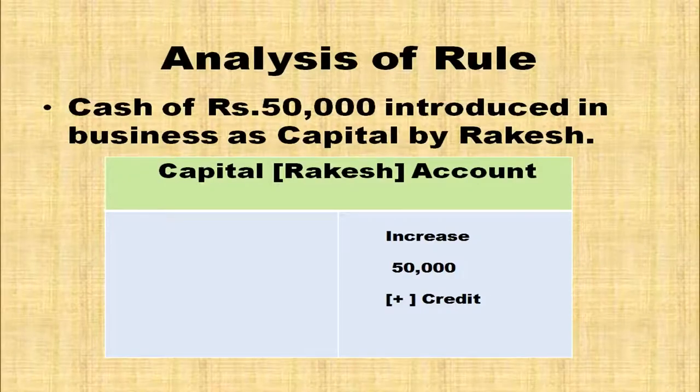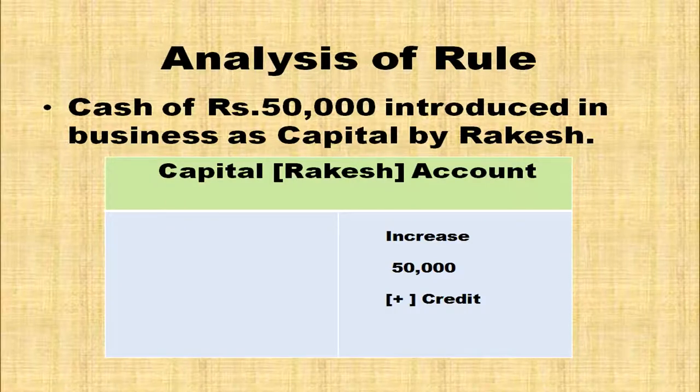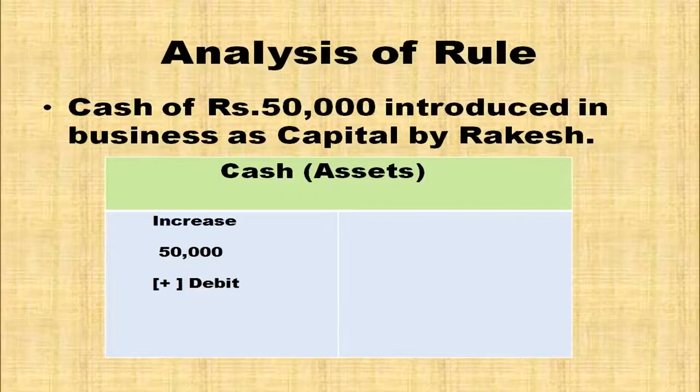Cash of Rs. 50,000 introduced in business as capital by Rakesh. Cash being an asset is increased — rule for asset: when increased, it is debited. Capital is coming inside the business — rule for capital: when increased, it is credited. So, Rakesh's capital account is credited and cash account is debited. Cash account debit to capital, or cash account debited and capital account credited.